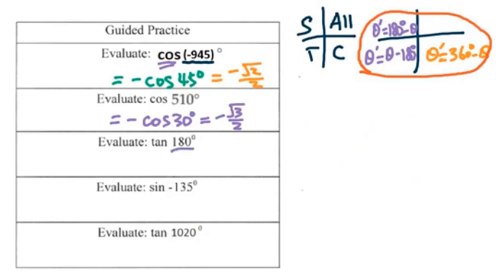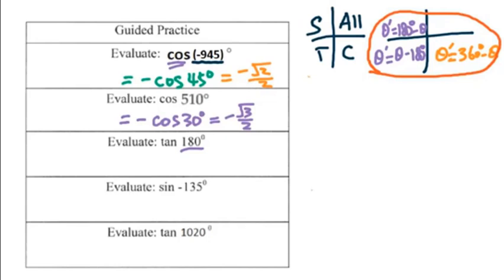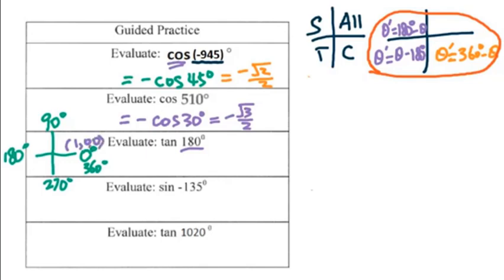For 180 degrees, this is a quadrantal angle, so there's an easier way. Just remember the coordinates for 0°, 90°, 180°, 270°, and 360°. The coordinates are: (1, 0, 0), (0, 1, undefined), (−1, 0, 0), (0, −1, undefined). For 0 and 180 degrees you only see the x-value changing from 1 to negative 1. For 90 degrees, the sine value is 1; for 270 degrees it's negative 1 — only the sign changes for that 1.